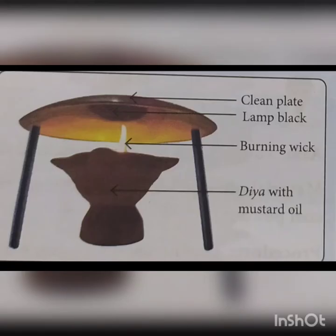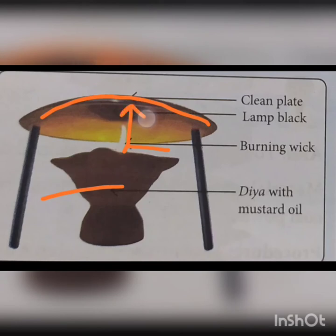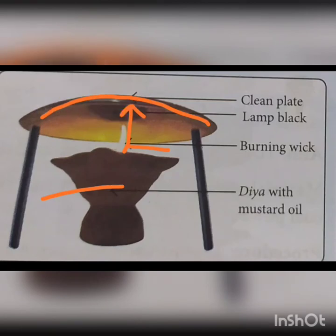We will now do an activity to prepare kajal from mustard oil. Materials required: a diya (lamp), mustard oil, a cotton wick and a clean metal plate. We take a lamp, fill it with mustard oil, and put a cotton wick in it and allow it to soak in the oil. We light the wick and put a clean inverted metal plate over it so that the flame is directly below the inverted plate. After some time, a deep black powdery mass gets deposited on the inner surface of the plate — this black powdery mass is lamp black, which is used as kajal.